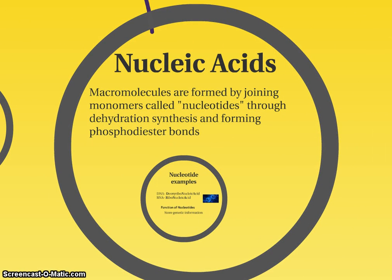The final macromolecule we're going to study is called nucleic acids. They are made of monomers called nucleotides. Nucleotides hook together by doing dehydration synthesis reactions, and the covalent bond formed between two nucleotides is called a phosphodiester bond. Each of these macromolecules gets its monomers put together with dehydration synthesis reactions, and each covalent bond gets a different name depending on the macromolecule you're talking about.